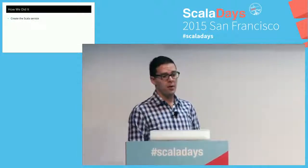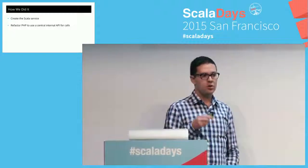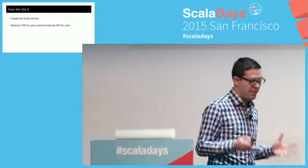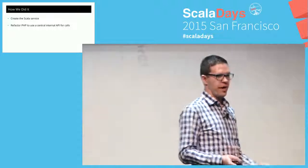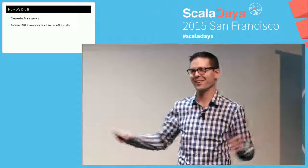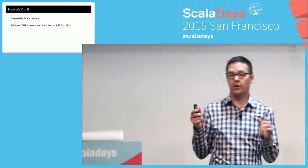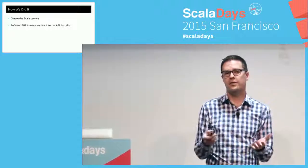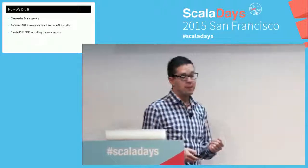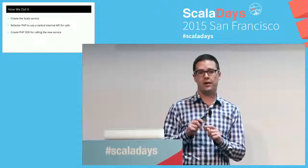We created our Gala service and our custom microservices framework. We refactored the PHP to use a central internal API for calls — and this was the hardest part. The step before this was writing unit test coverage over the entire code base we were touching, so we could safely refactor it to use an internal API call. Then we created a PHP SDK for calling the new service — the SDK wraps the RPC layer. Then we dark launched it.